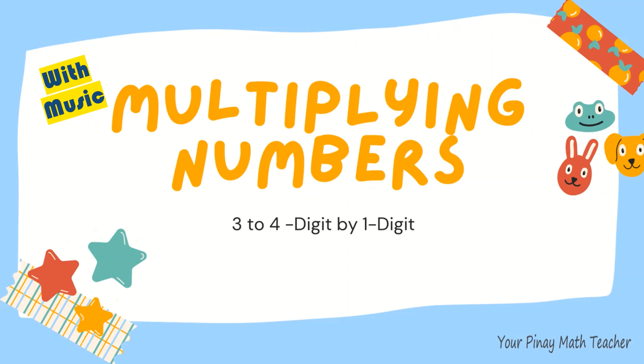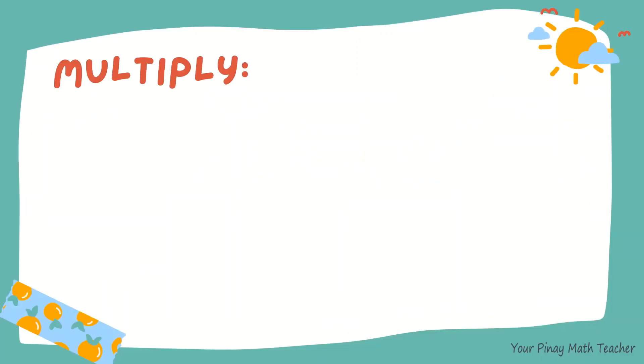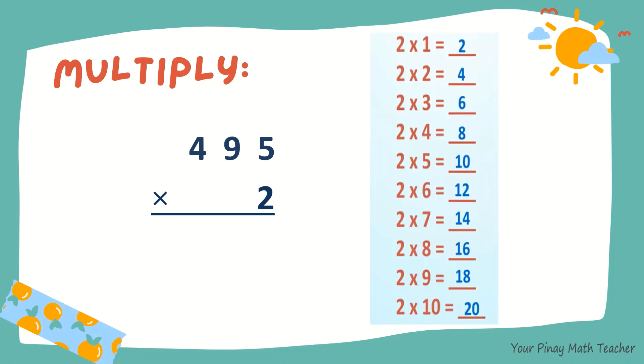How to multiply 3 to 4-digit numbers by 1-digit multiplier. Example, 495 times 2. I'm gonna show you the times table of 2 for familiarity and guidance as we go along. Let's start.